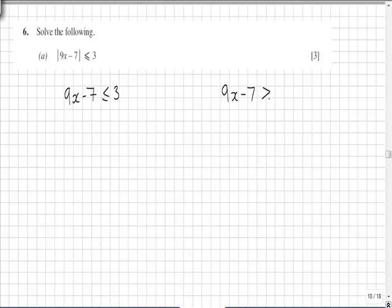9x minus 7 is greater than or equal to minus 3. So solving the first function, we have 9x has got to be less than or equal to 10. x must be less than or equal to 10 over 9.